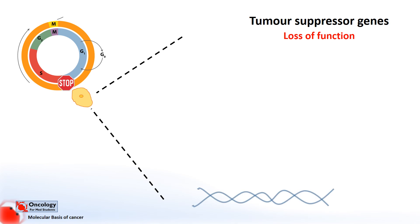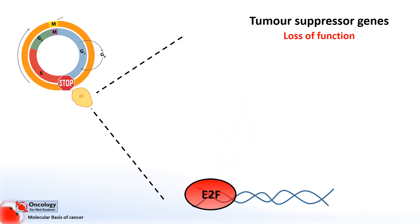When a cell reaches the G1 checkpoint to pass into S phase, where DNA replication occurs, it needs to build the proteins or enzymes needed to carry out DNA replication. An important part of this process involves a protein called a transcription factor. Transcription factors are proteins that bind to sequences of DNA and encourage the transcription of particular genes, which are then turned into proteins. At the G1 checkpoint, the most important transcription factor needed to start building the proteins for DNA replication is E2F.